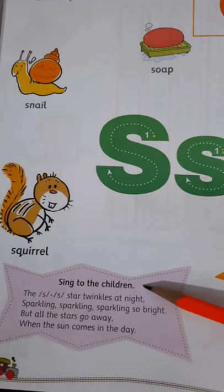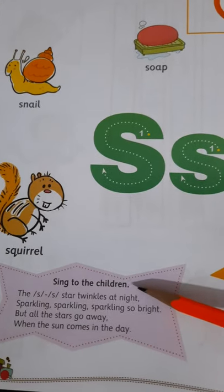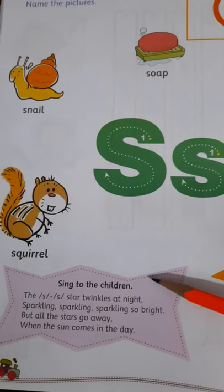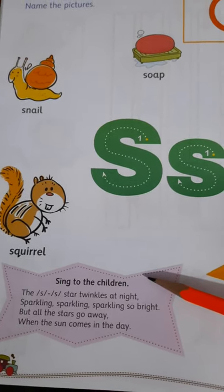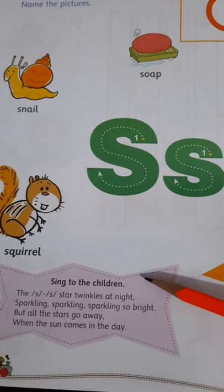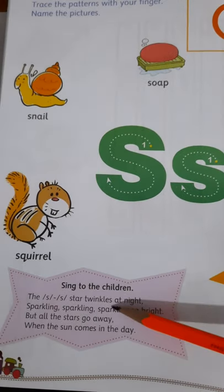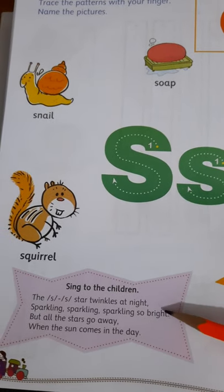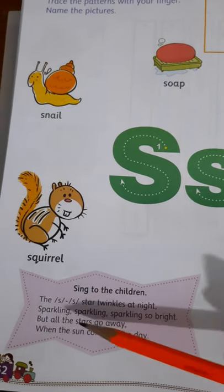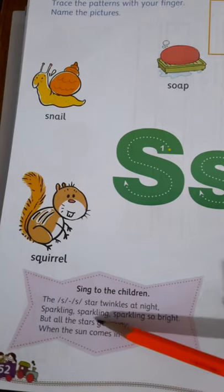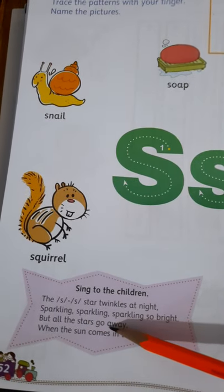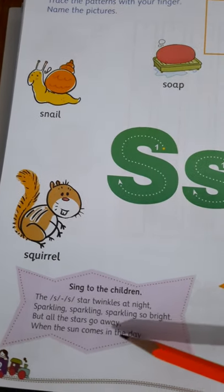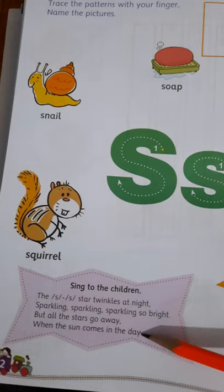Now sing to the children. This S — Star twinkles at night, sparkling, sparkling, sparkling so bright. But all the stars go away when the sun comes in the day.